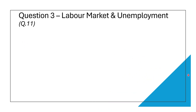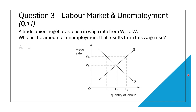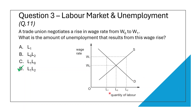This is question 11 from the paper. A trade union negotiates a rise in wage rate from W0 to W1. What is the amount of unemployment that results? The correct answer is option D. At the higher wage W1, the quantity of labor supplied increases to L2 — more people want to work — but firms only want to hire up to L1 because of the higher cost. The difference between L2 and L1 is the number of people willing to work but unable to find jobs. That is how we measure unemployment on these diagrams.